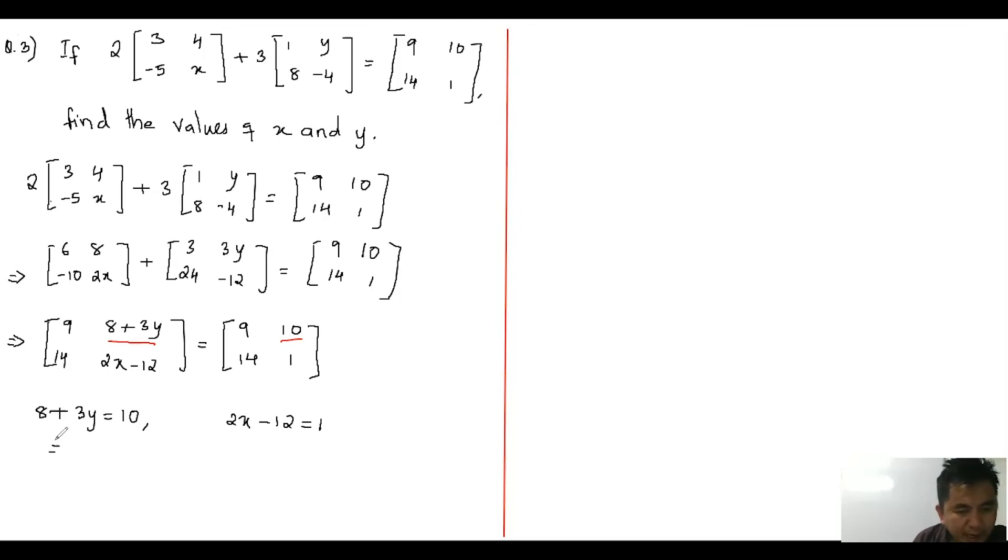From here we have three y equals ten minus eight, which implies three y equals two, which implies y equals two over three.